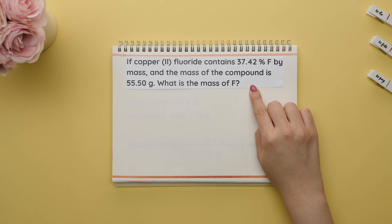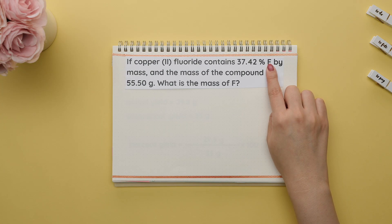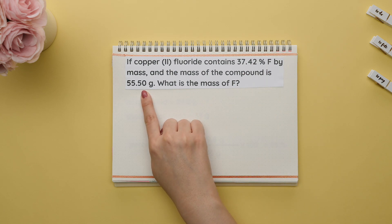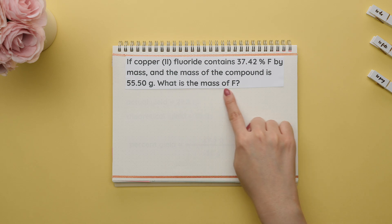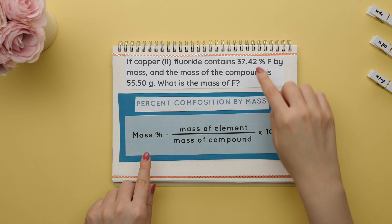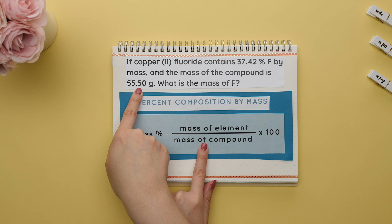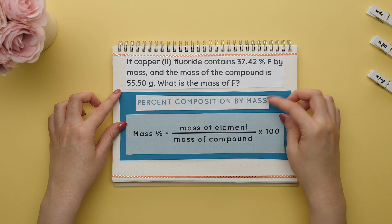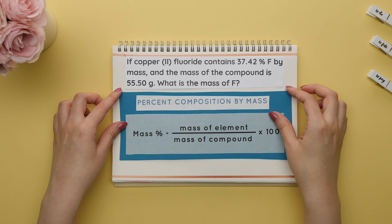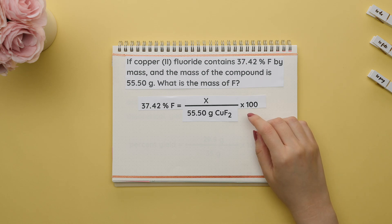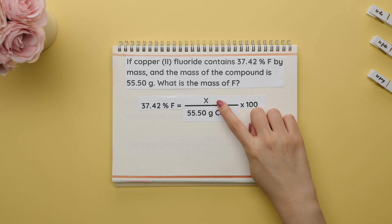Let's change things up and go from a percentage to a decimal. This example states: if copper(II) fluoride contains 37.42% of fluorine by mass and the mass of the compound is 55.50 grams, what is the mass of fluorine? We are already given the percent by mass of fluorine and the total mass of the compound. The only thing left to find is the mass of fluorine. Start by plugging everything we know into the percent composition formula, placing an x for the grams of fluorine since that is what we are solving for.